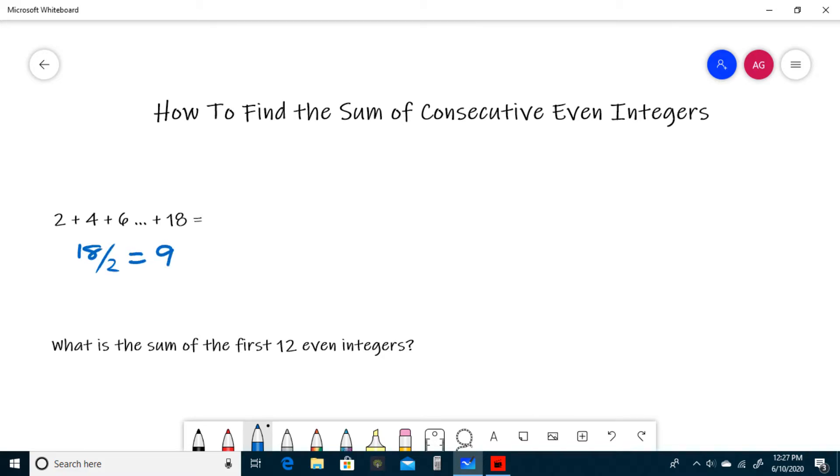After we get the 9, multiply by one more than itself. One more than 9 is 10, so we do 9 times 10, which is the same thing as 90. So 2 plus 4 plus 6 all the way to plus 18 is equal to 90.